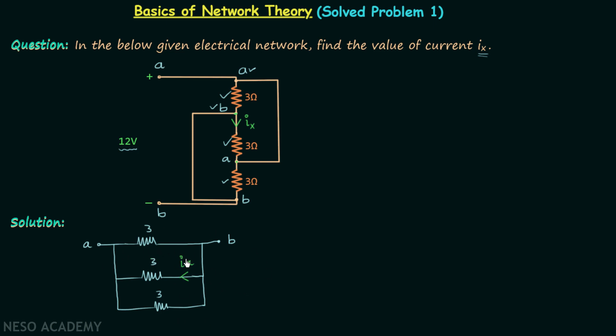Now from here we can calculate current Ix easily because we know across A and B we have 12 volts potential difference. If at B terminal the potential is 0 volt, then at A terminal the potential will be 12 volts. This means at this point the potential is 12 volts and at this point the potential is 0 volt. Now we will apply KVL